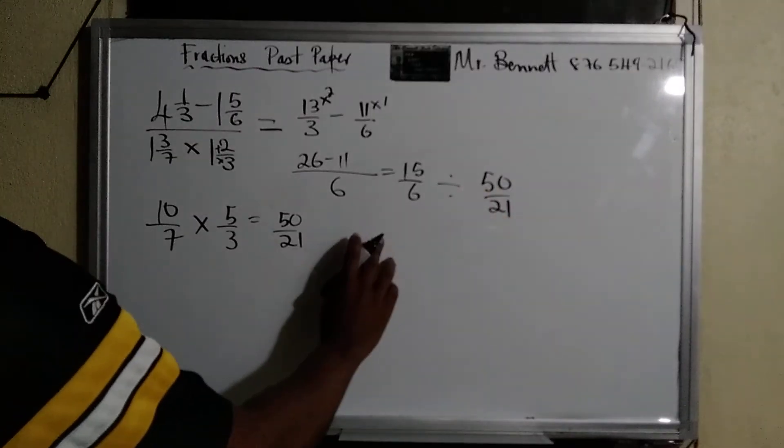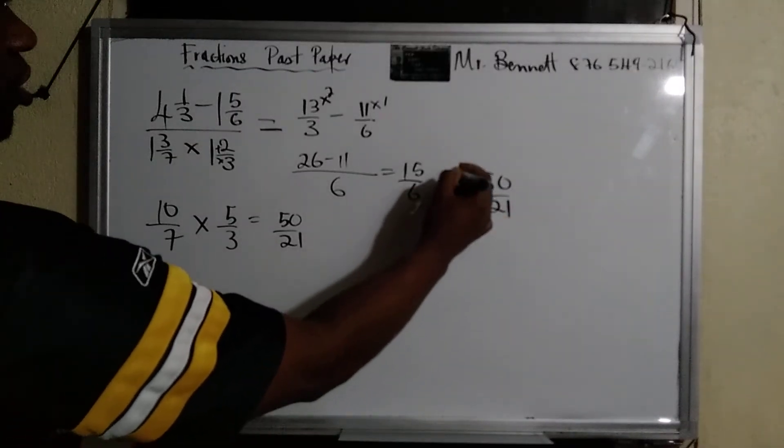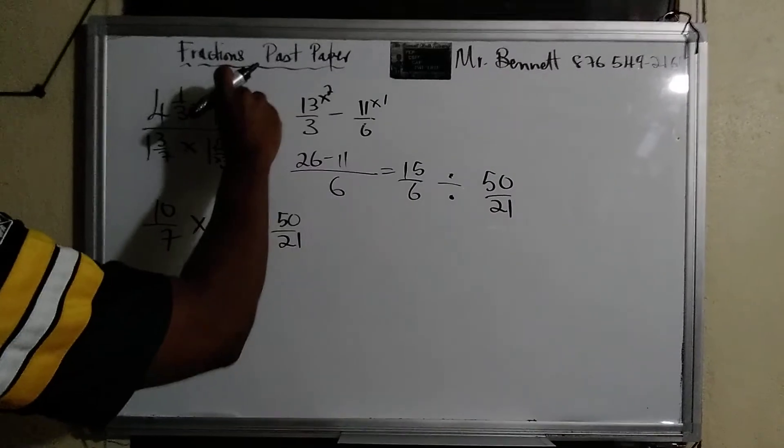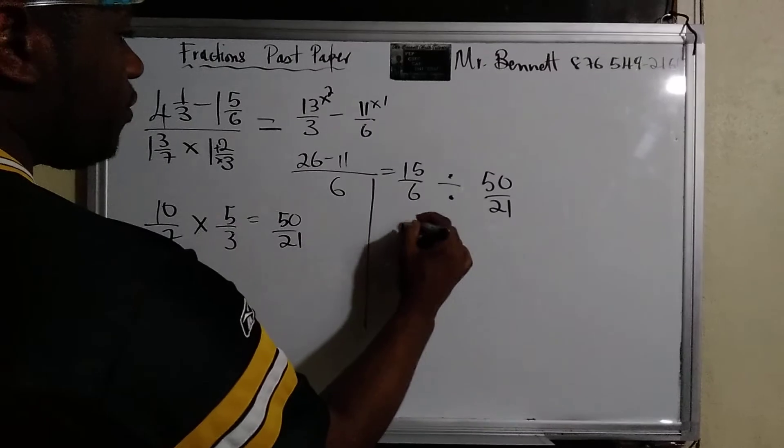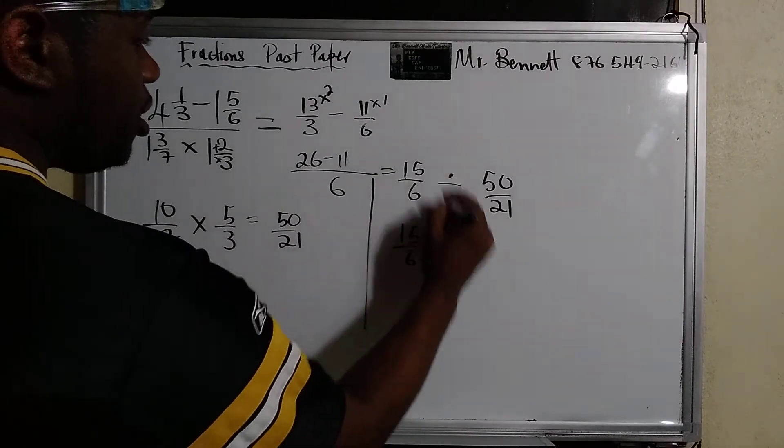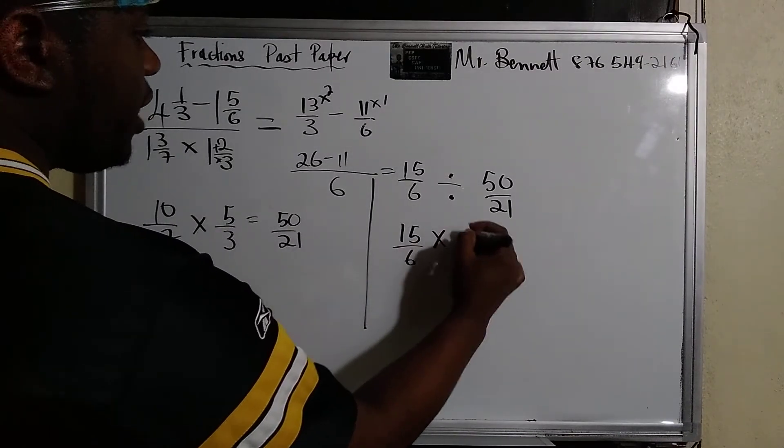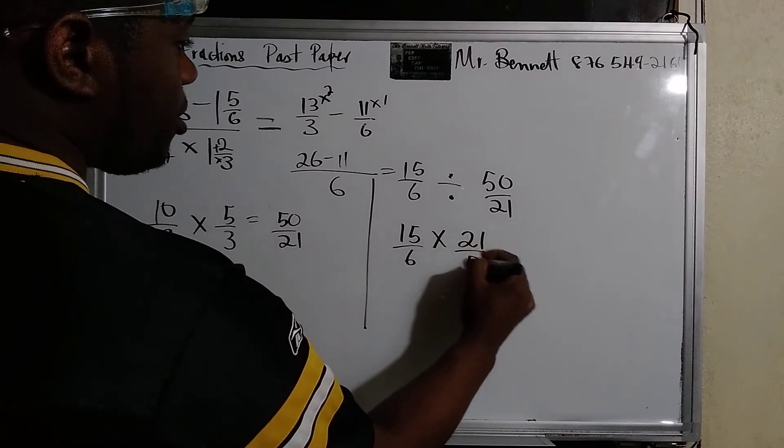So it's important, guys, that we divide fifty over twenty-one. Common mistakes students make: they'll put fifty over twenty-one here and then divide. No, it must be in the same order. This divided by this. So let's go now. So it will be fifteen over six, change it to multiplication, invert the fraction. A common error also.